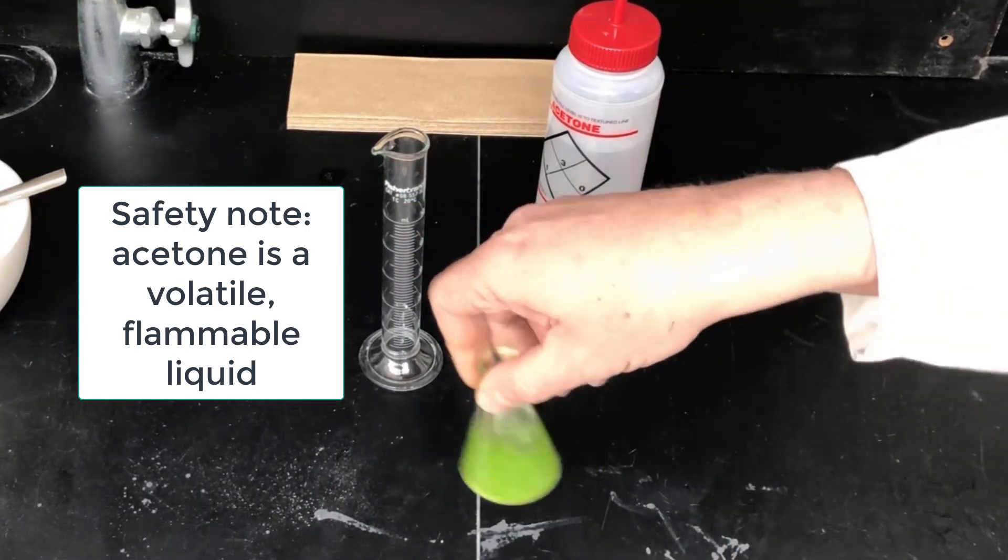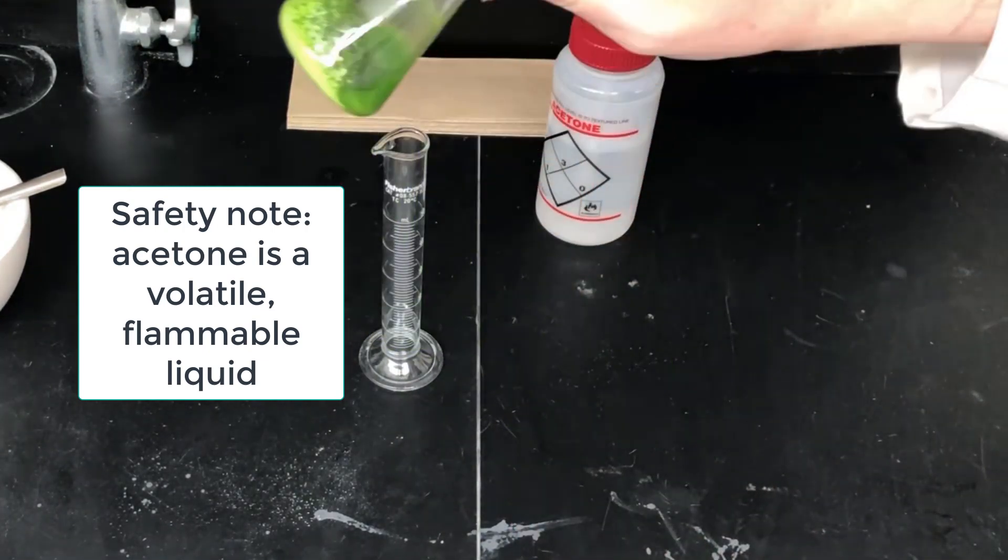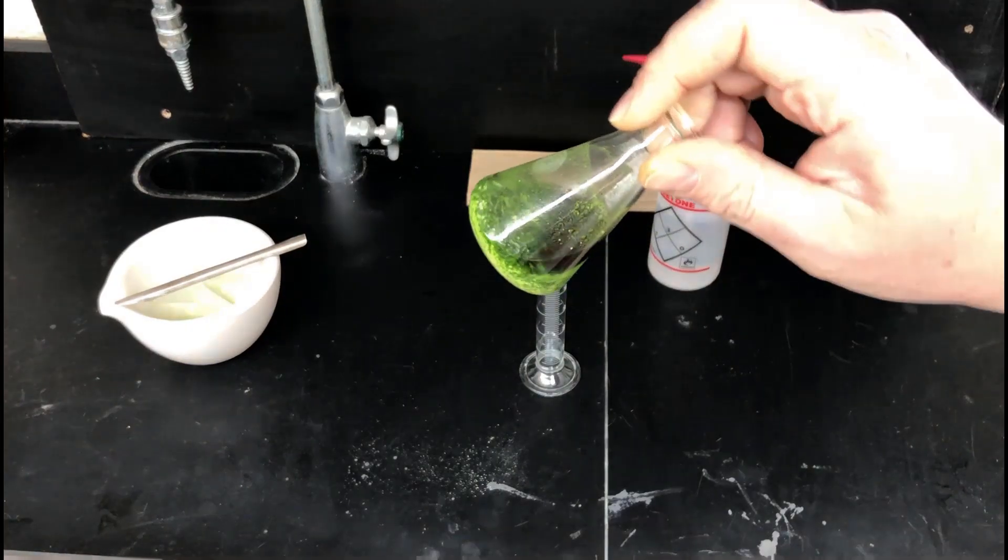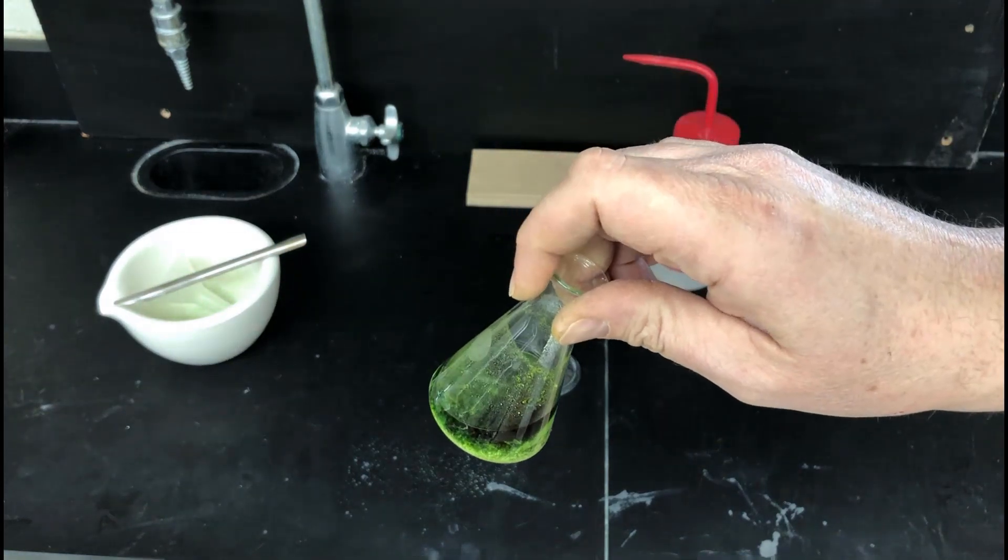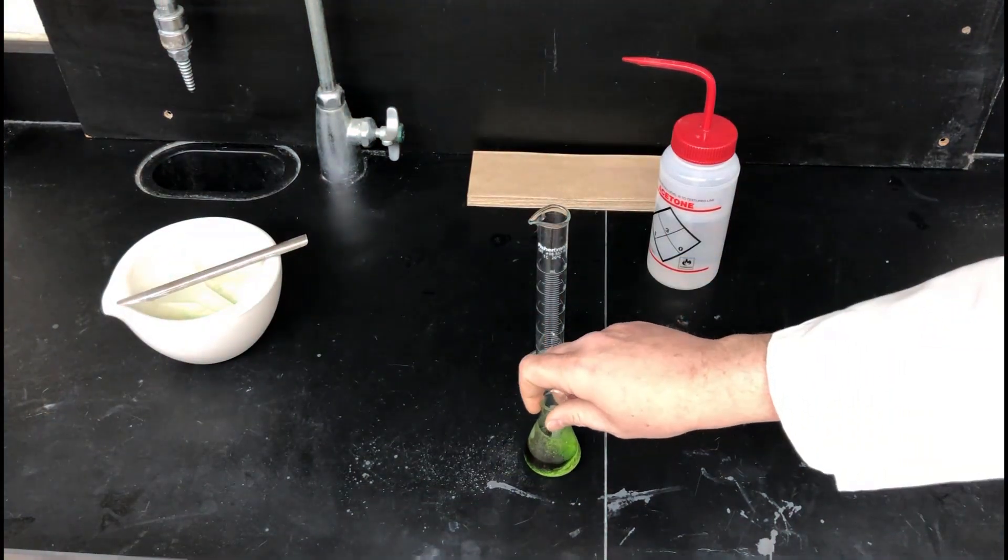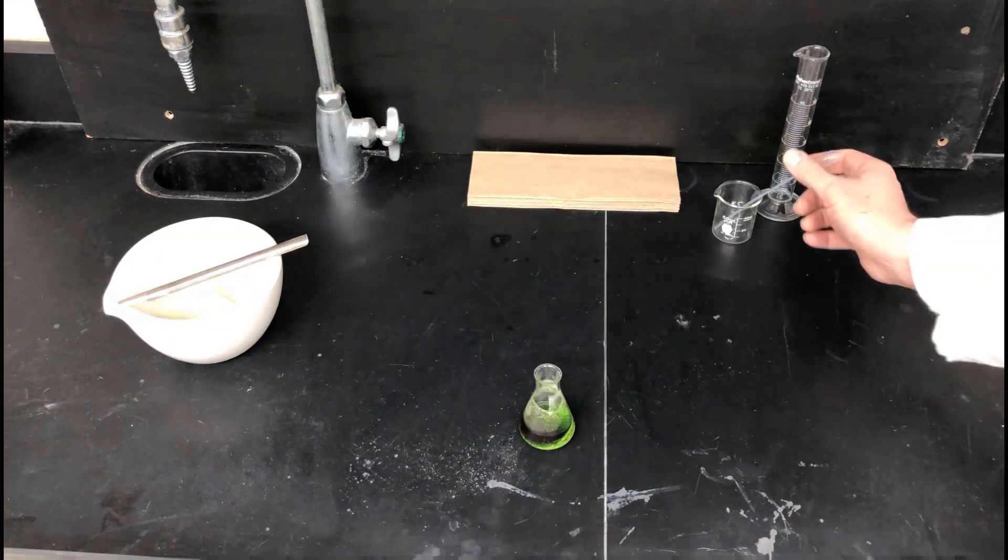So now there's this acetone solution that's swirling around in there. And if you swirl it around, stop it for a bit, you'll see a dark green liquid above the solid. That's the pigment solution that we want.